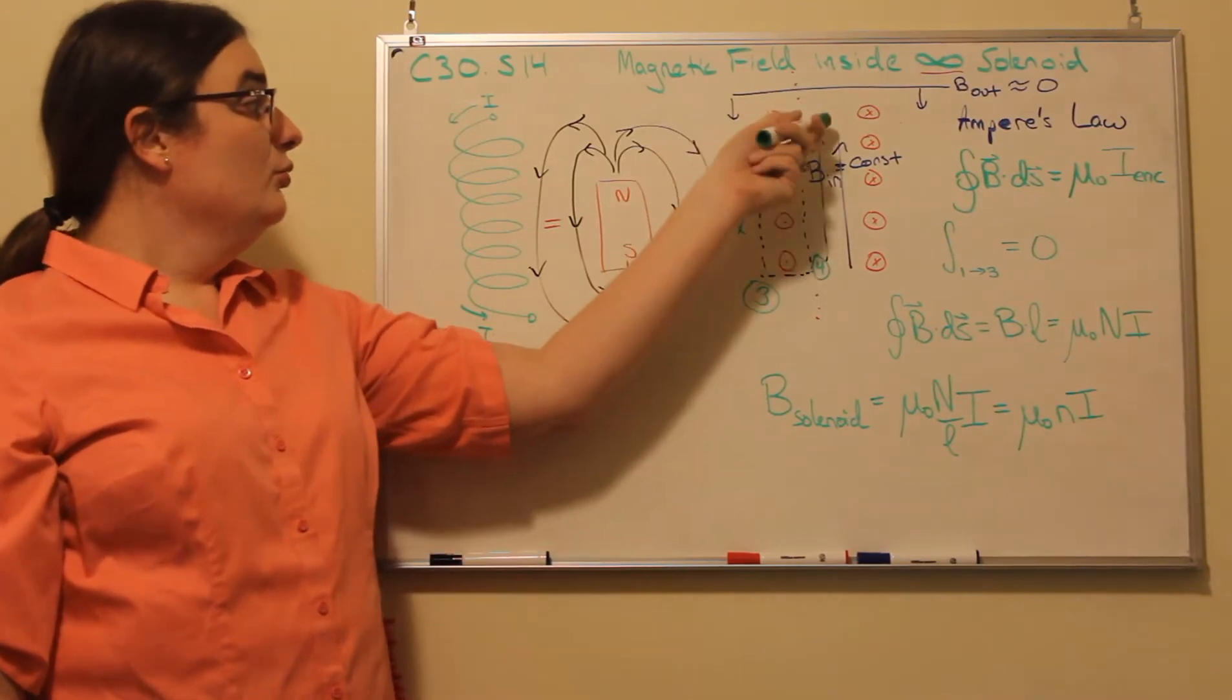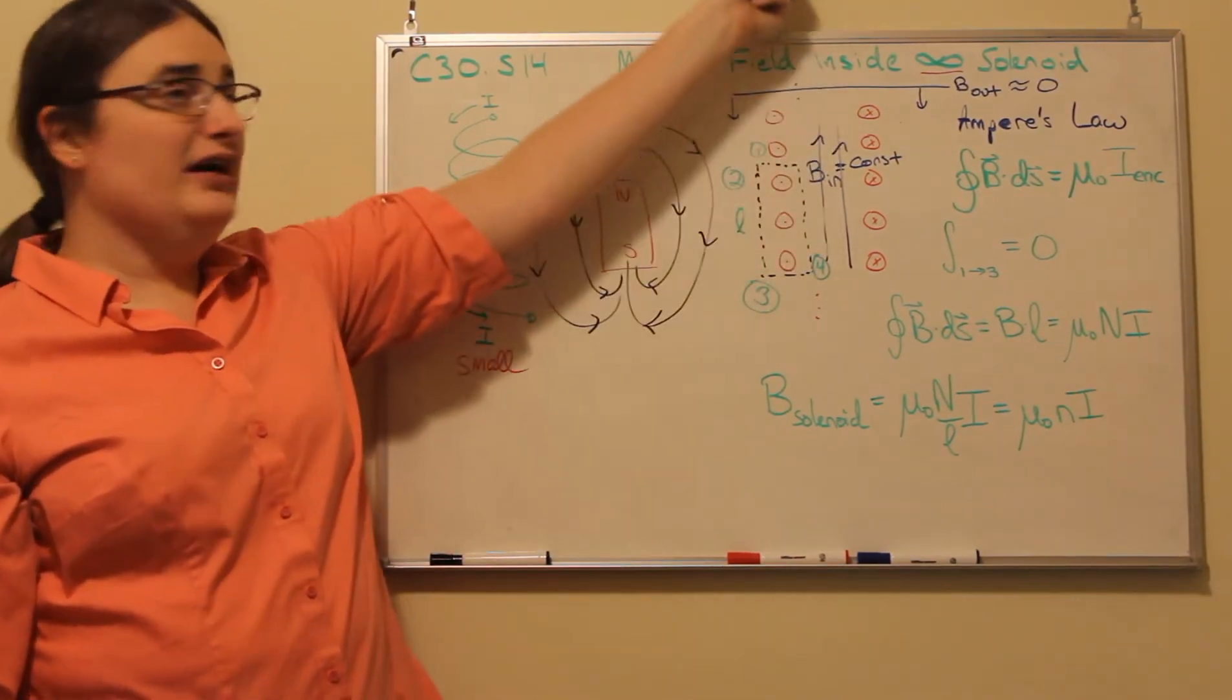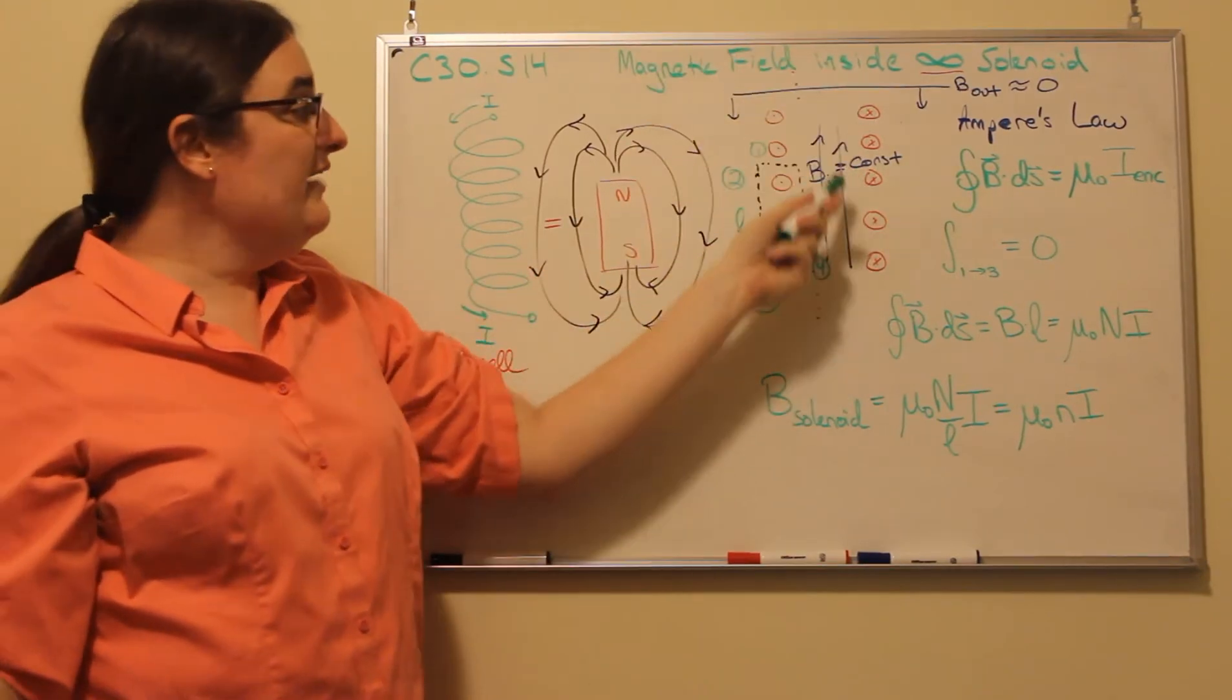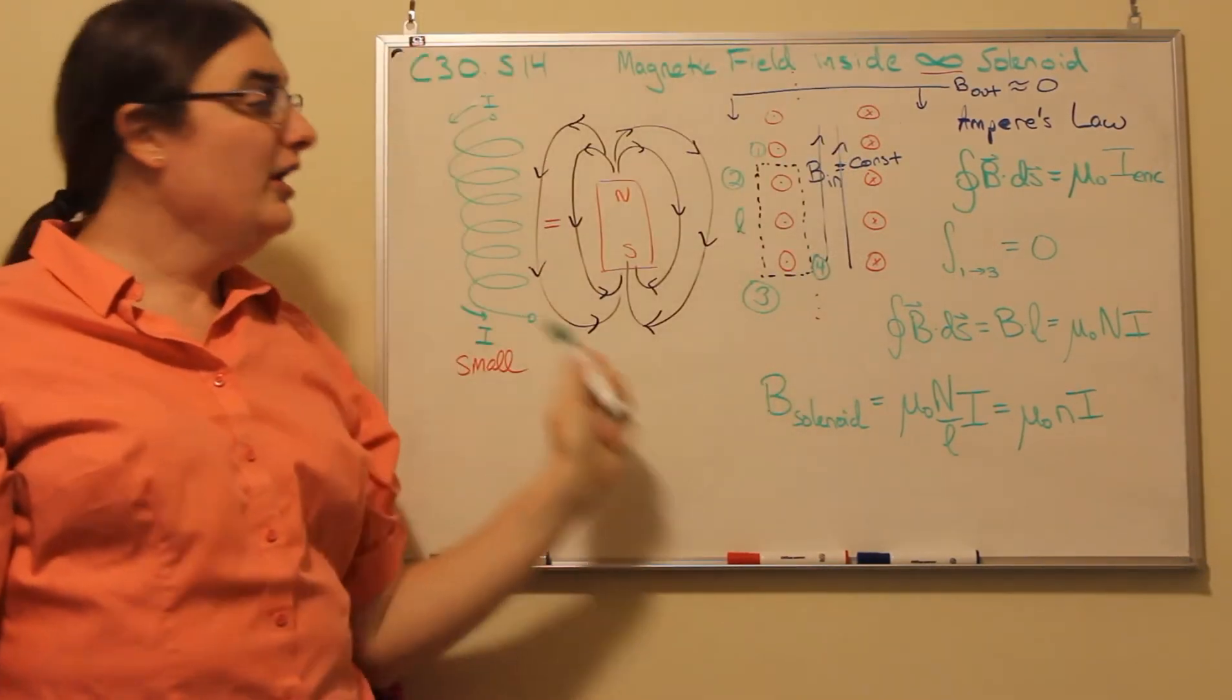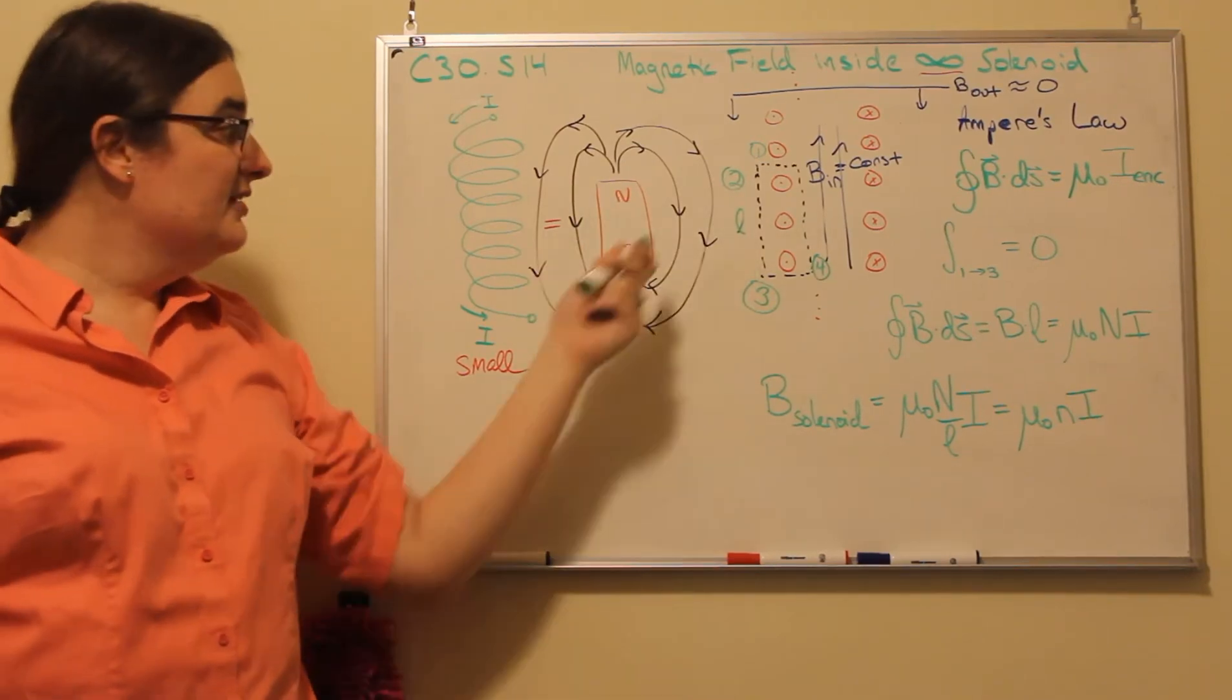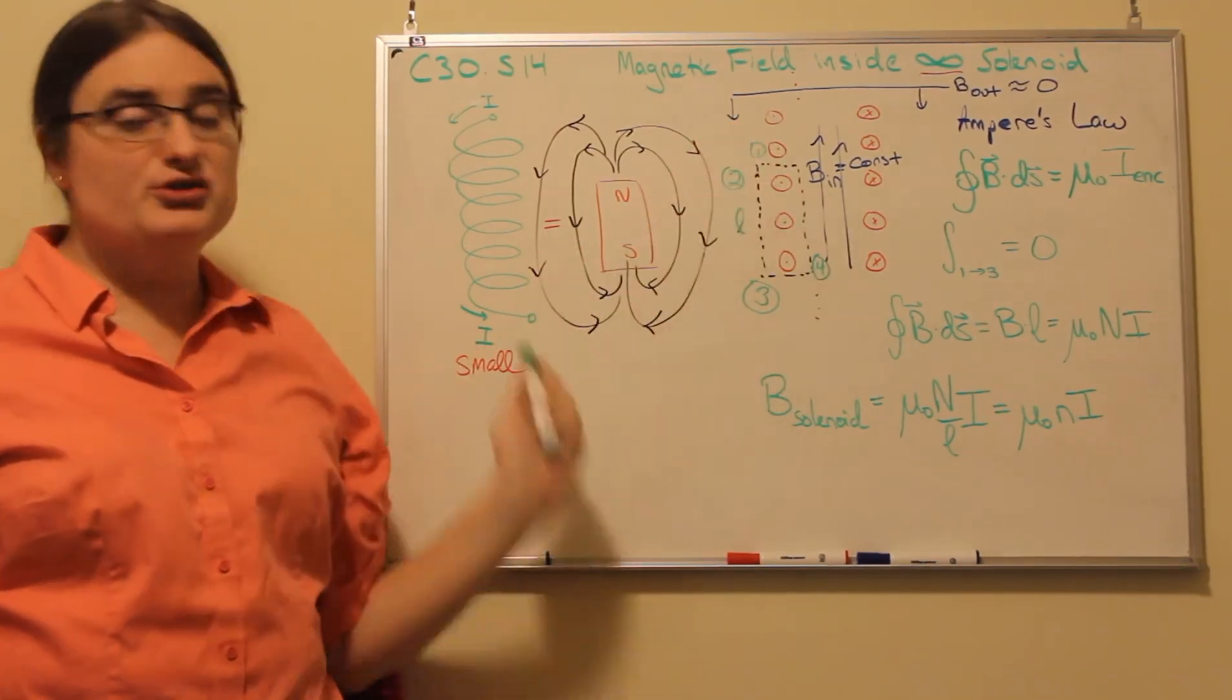We're assuming that these magnetic field lines are going to loop around, and since this is infinitely long, they would have to travel to infinity in order to loop around. That means just outside, the magnetic field is almost going to be zero.